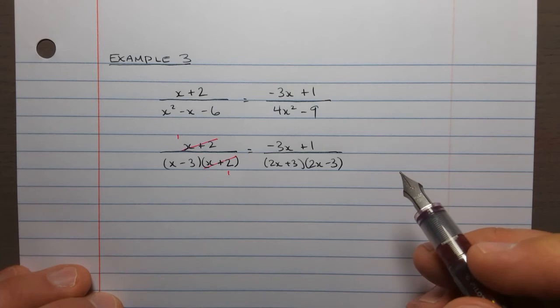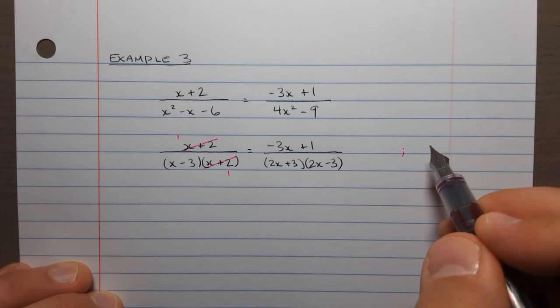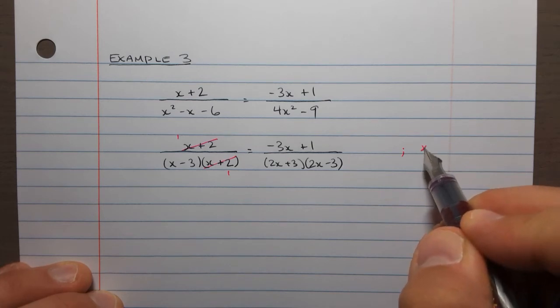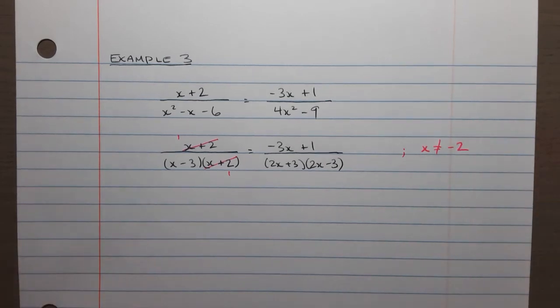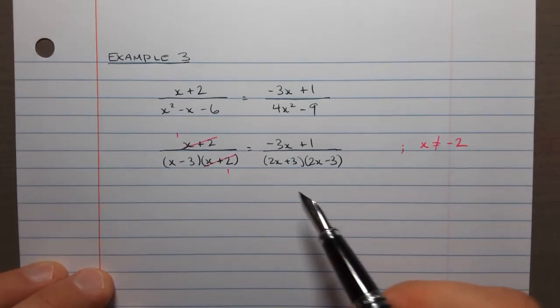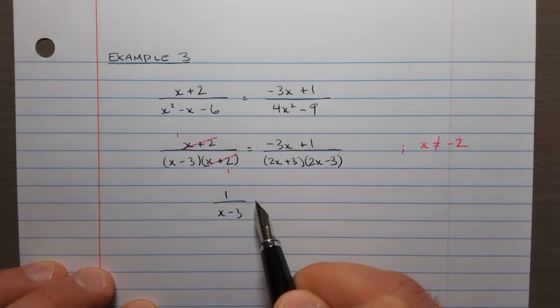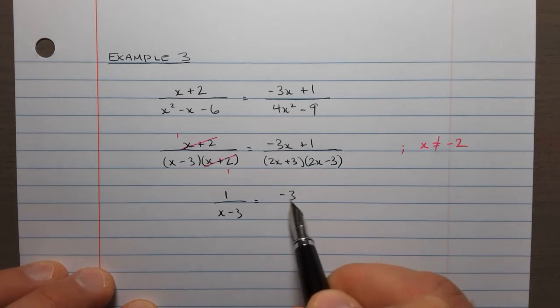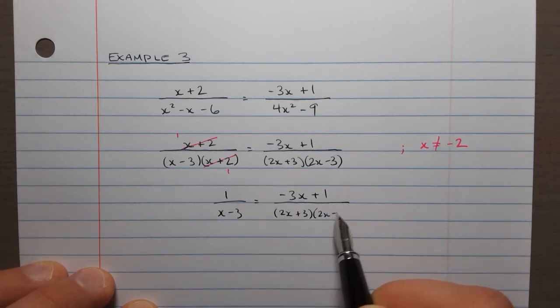But when I do, I also have to record that restriction. There are other restrictions, but this one is critical right now. You can't lose it. By dividing it out, I have to make sure I mention that x cannot be negative 2. So you have to record it whenever you remove it, whenever you remove the information that would show it's there. Okay, so now maybe I'll just rewrite this to sort of show you the simplified version. We have 1 over x minus 3 is negative 3x plus 1 divided by 2x plus 3, 2x minus 3.